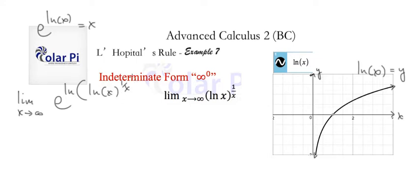And so by using the properties of ln, then we could rewrite this as limit as x goes to infinity of e to the 1 over x times ln of ln of x.